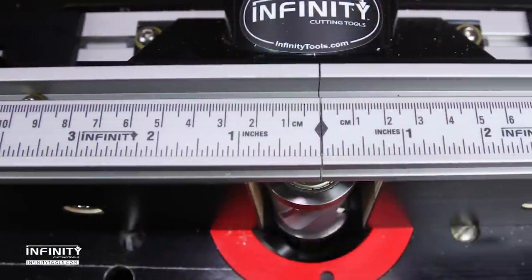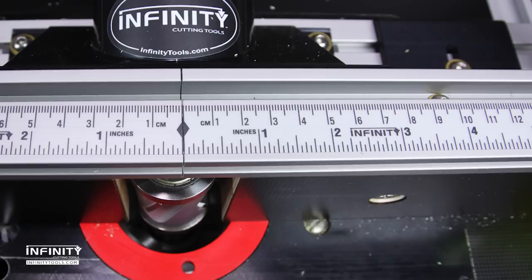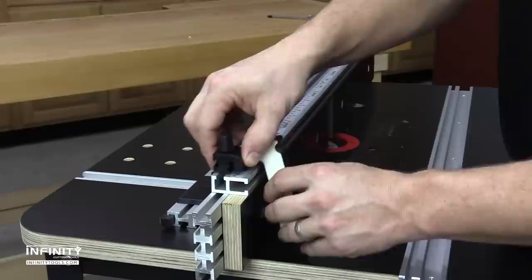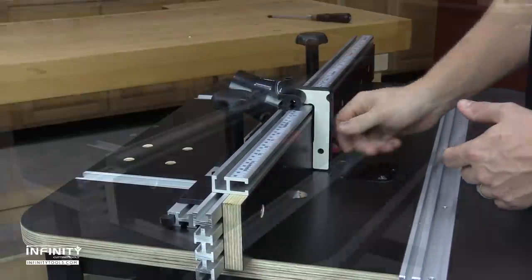The top rail extrusions come with two 16-inch standard and metric rules and have built-in quarter-20 T-tracks that work with any compatible featherboards, hold-downs, or accessories, including the Infinity Router Fence Flip Stop.